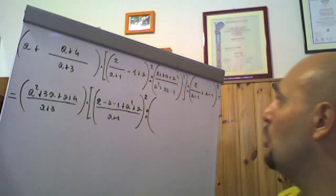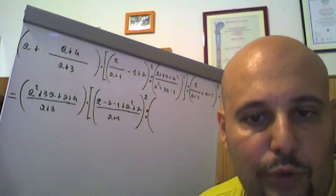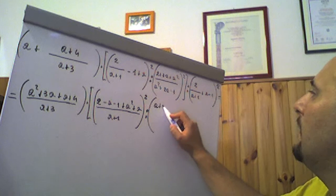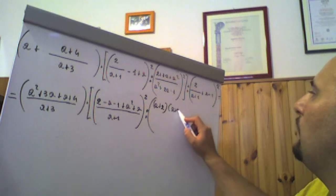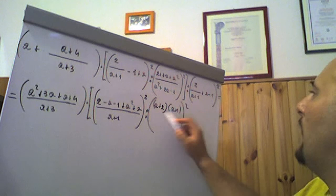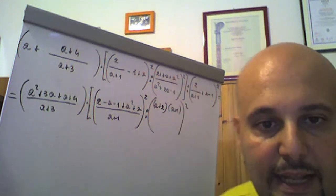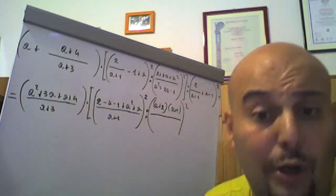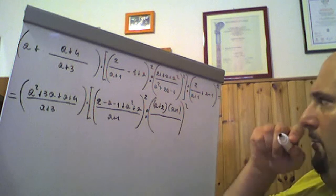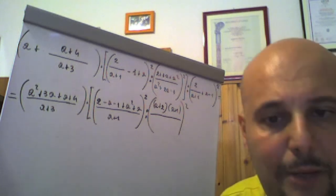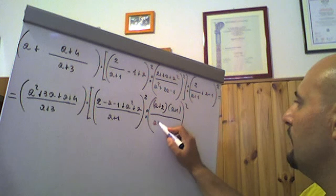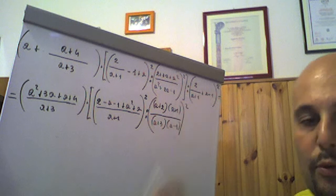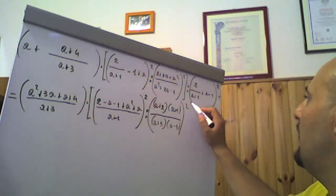Diviso, a per la tonda. 2 più 3a più a quadro: a quadro più 3a più 2 è un trinomio di secondo grado della variabile a, di tipo notevole, cioè scomponibile in (a più 2) per (a più 1), in quanto 2 per 1 fa 2, 2 più 1 fa 3, coefficiente davanti all'a. Stesso discorso vale per il trinomio di secondo grado a quadro più 2a meno 3, che se è posto al denominatore è anch'esso notevole, scomponibile in (a più 3) per (a meno 1). Infatti 3 meno 1 fa 2, 3 per meno 1 fa meno 3. Chiusa la quadra.